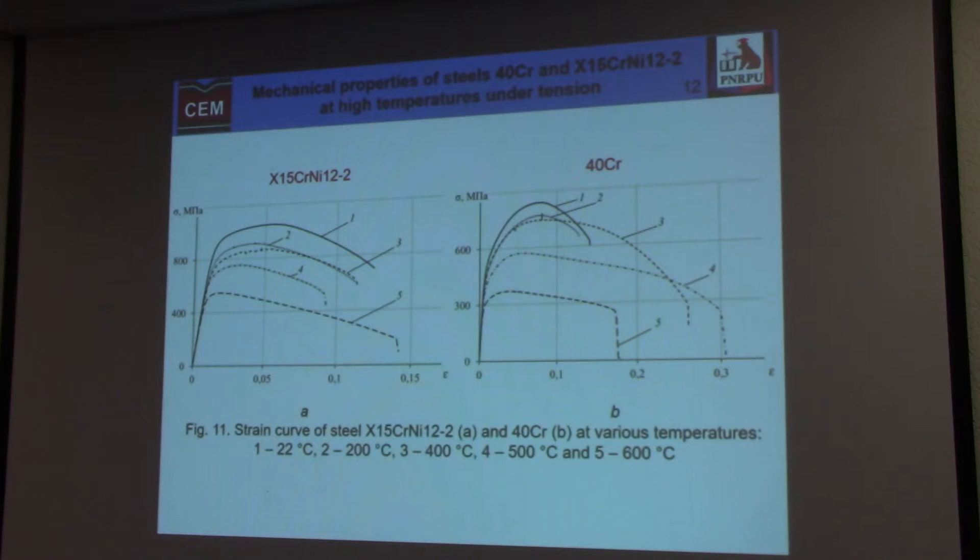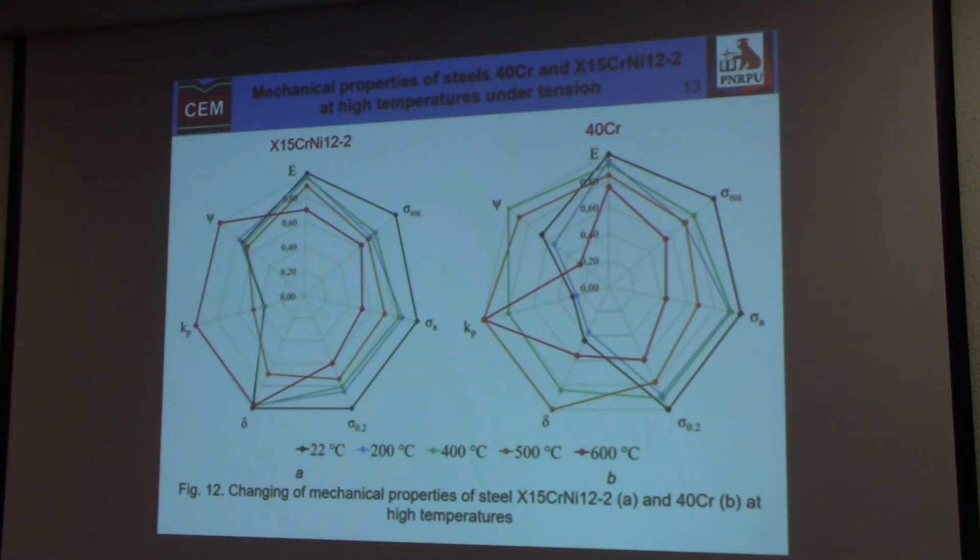In the results of test, we have stress-strain curves of these steels for different temperatures, and from this data we have a mixed set of mechanical properties of materials. It's convenient for analyzing of these properties to use spider graphs. Here each color line corresponds to test under one temperature.